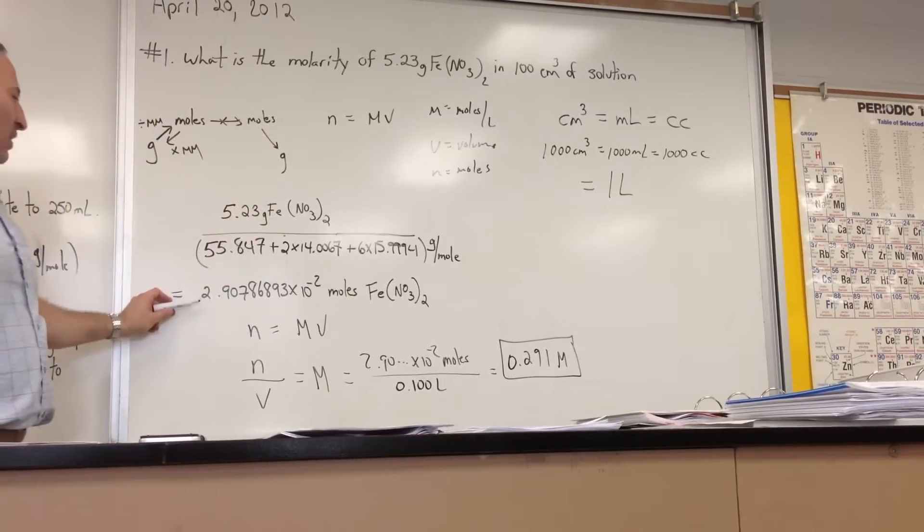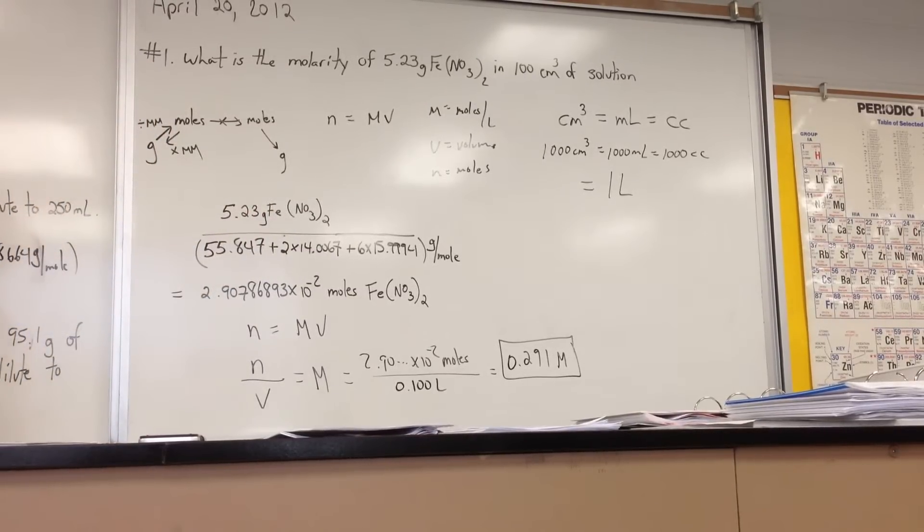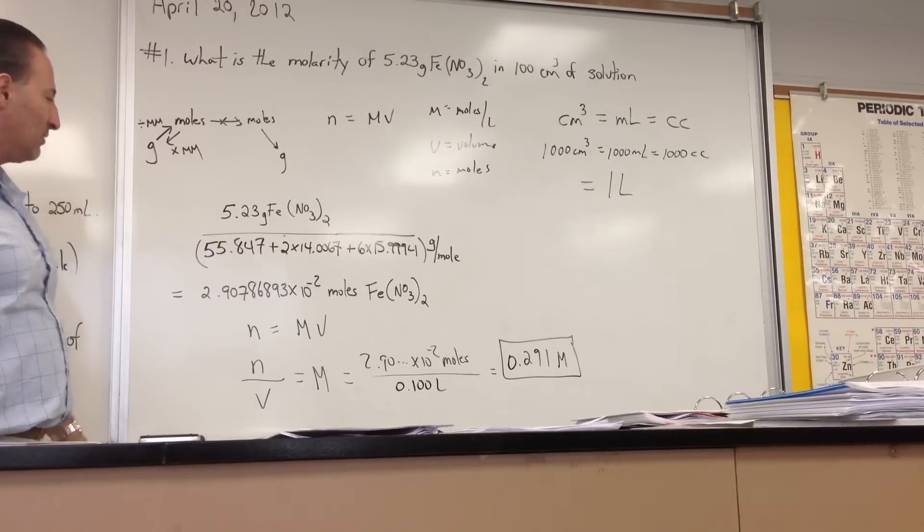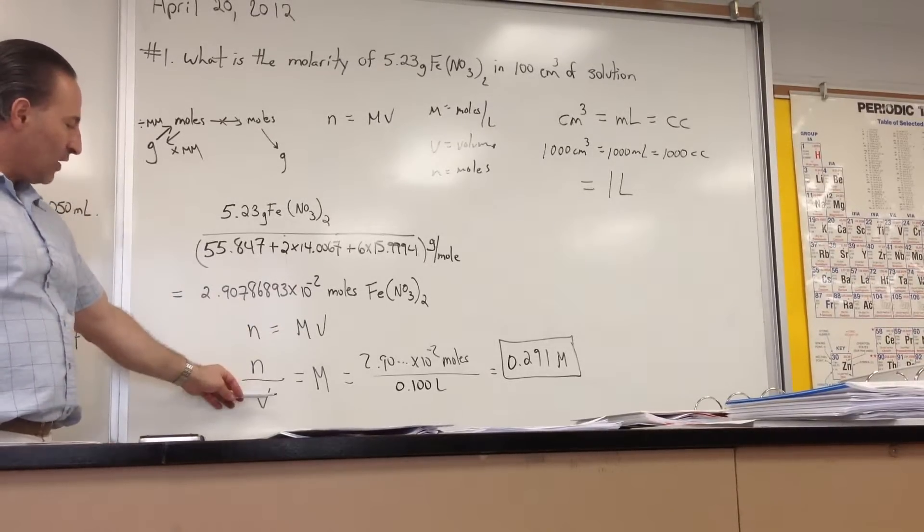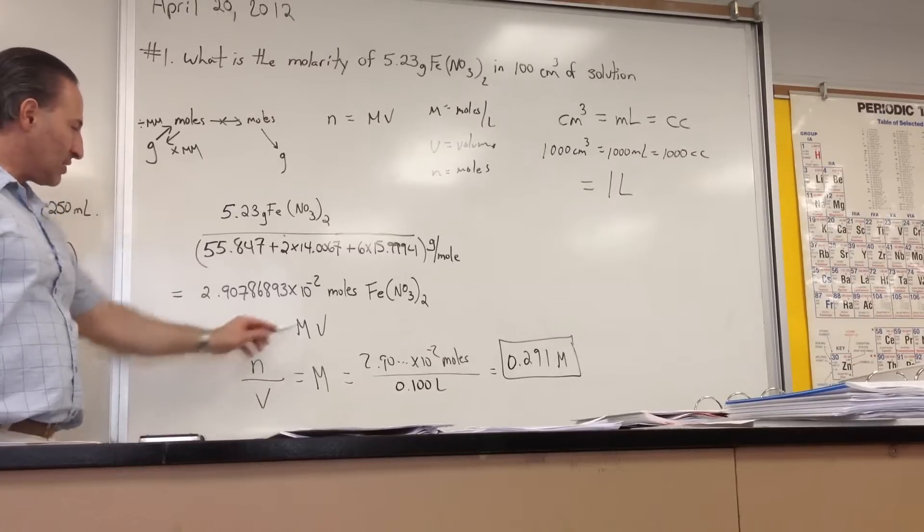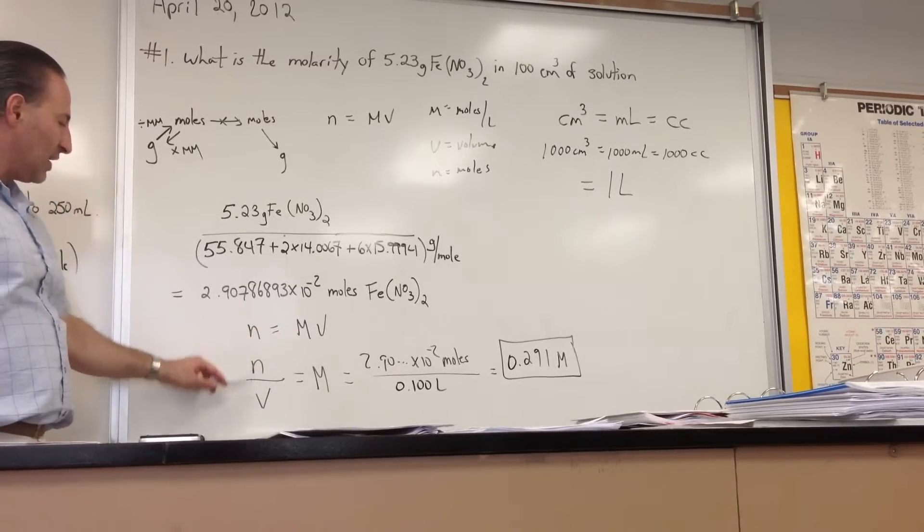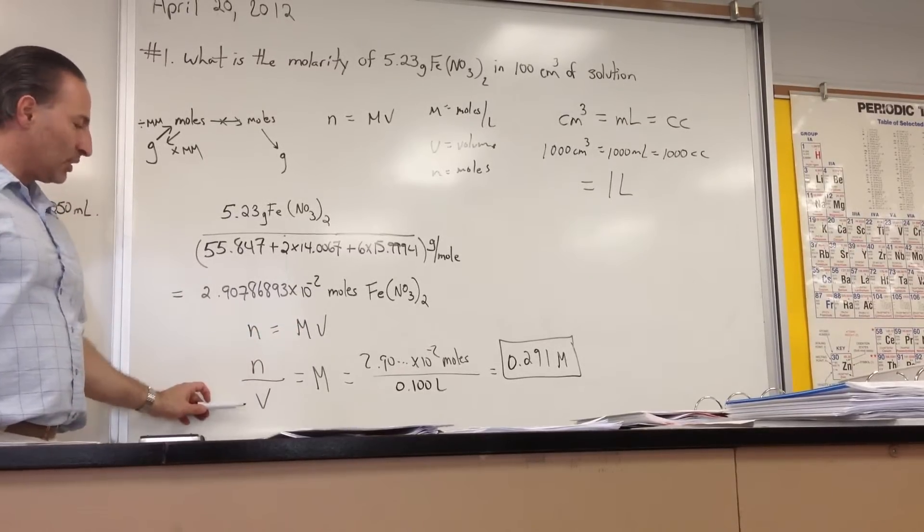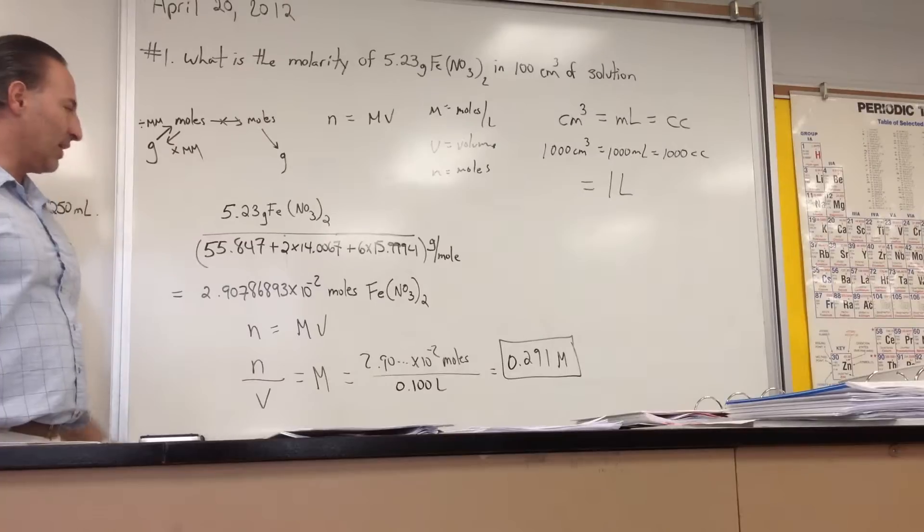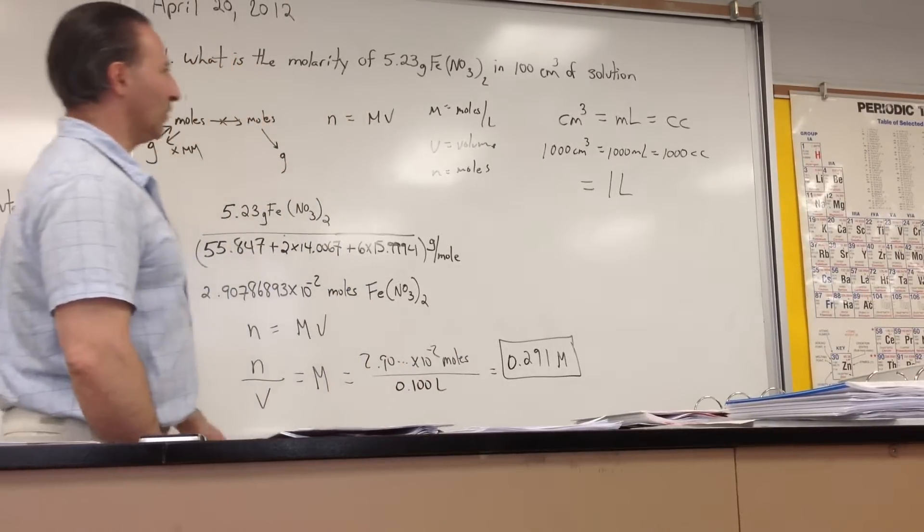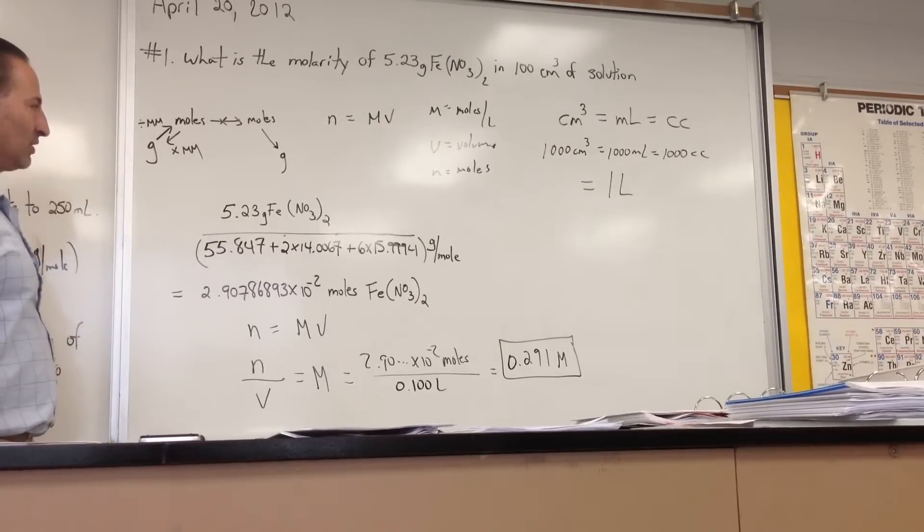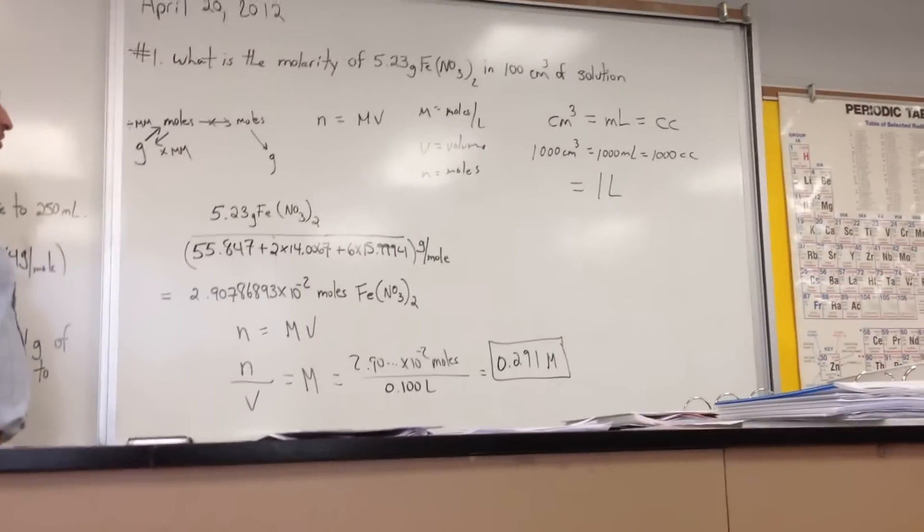It turns out we have 2.9 times 10 to the minus 2 moles of ferrous nitrate. We then plug in the values we have into the formula after we rearrange it to solve for molarity. We transpose the V under the N. N over V, moles per liter, is the definition of molarity. 2.9 divided by 0.1 gives you 0.291 molar. That is the concentration of ferrous nitrate in this particular solution.